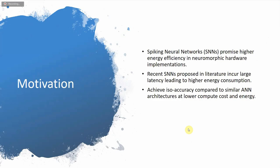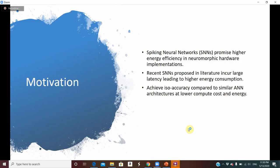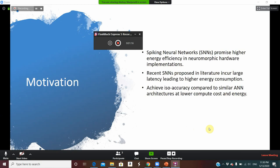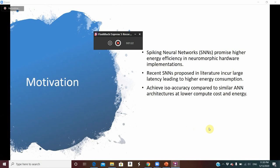Hi everyone, I'm Akshay. Let me go over the motivation for our project. Spiking neural networks offer a low power alternative to conventional artificial neural networks, making them attractive for use in neuromorphic hardware implementations. With all their appeal for power efficiency, training SNNs still remains a challenge. There have been several works proposing ANN to SNN conversion, but such converted SNNs require a large number of time steps to achieve competitive accuracies, leading to higher energy consumption.